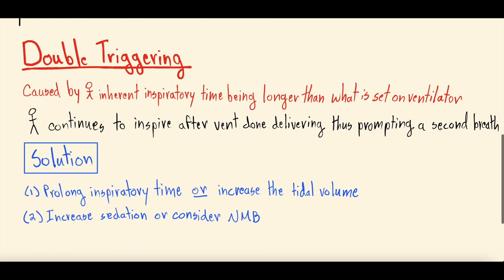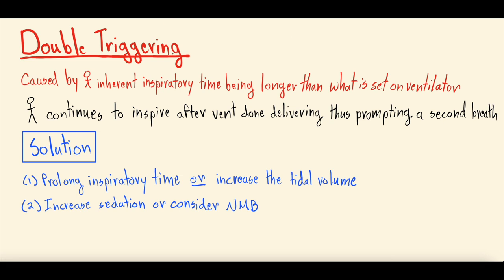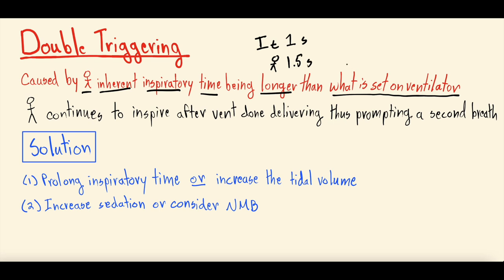Double triggering is diagnosed on your scalars and is caused when the patient wants to inspire for longer than the ventilator is allowing. Their inherent inspiratory time is longer than what the ventilator is set to. For example, if the ventilator's inspiratory time is set to one second but the patient wants to inspire for 1.5 seconds, the ventilator stops inspiratory flow after one second while the patient is still inspiring for 0.5 more seconds — prompting a second breath.